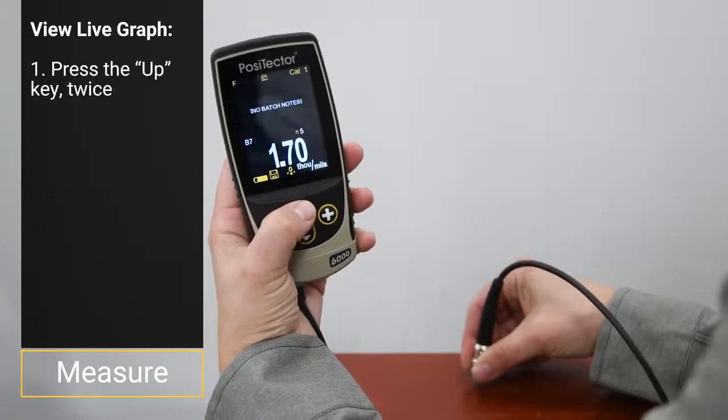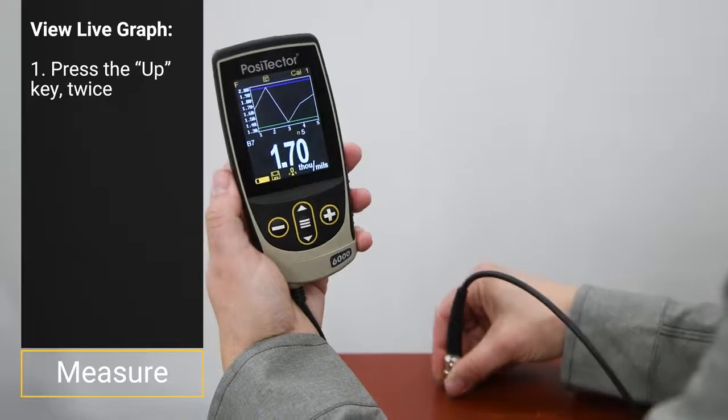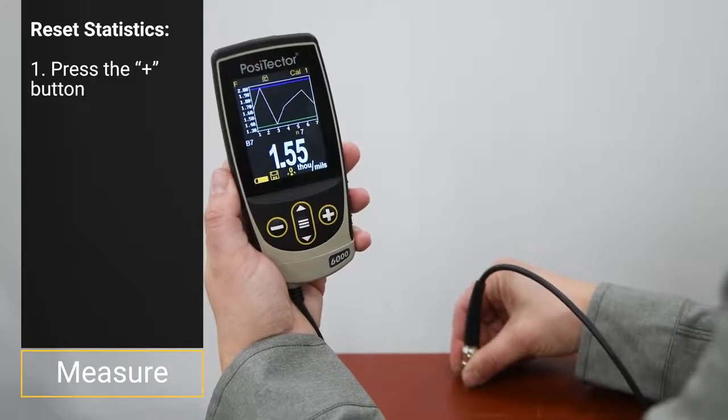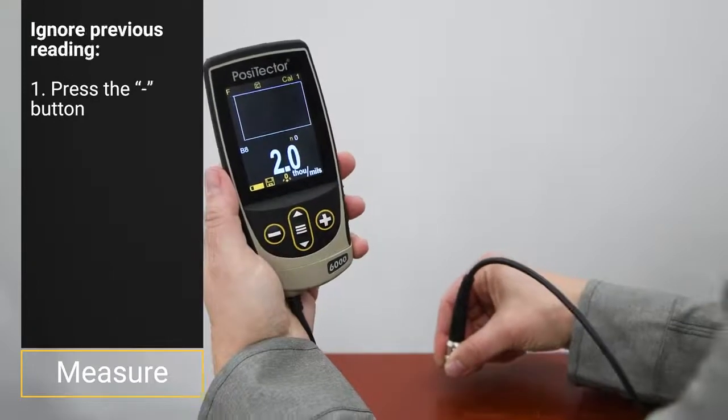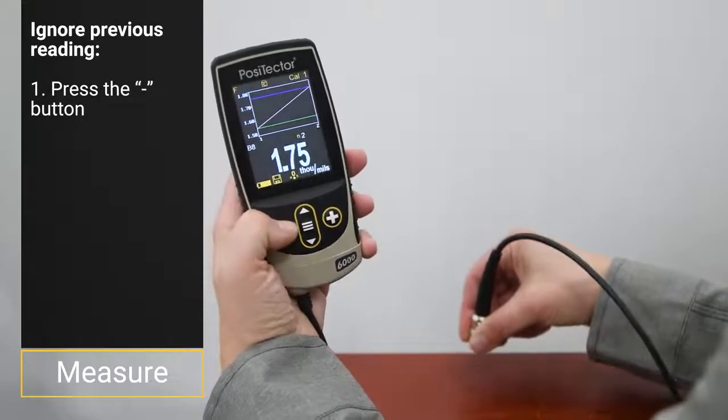On advanced models, press the up key to view a live graph of the readings while they are being taken. To reset statistics or create a new batch, press the plus button. To ignore the previous reading, press the minus button.